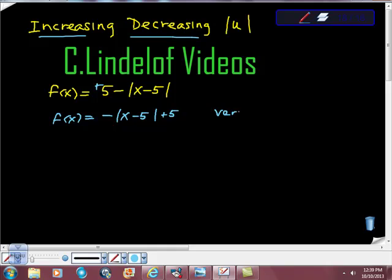This is called the vertex form. We know that it's absolute value of x minus h plus k, and that the vertex is the point (h, k).